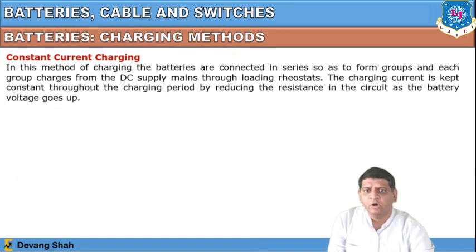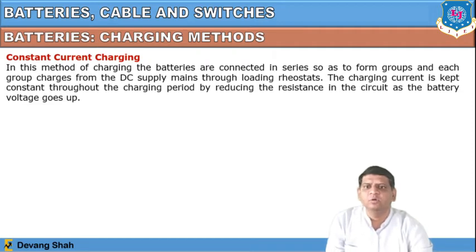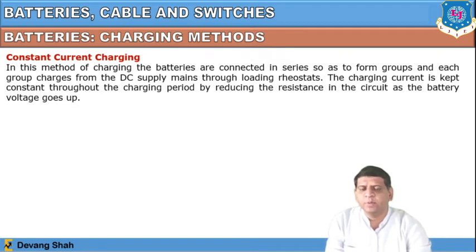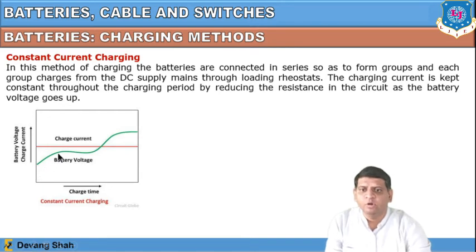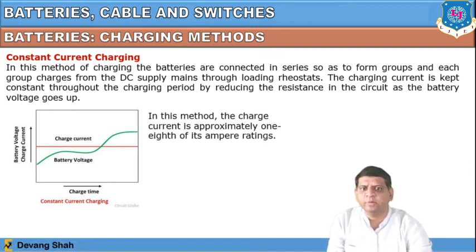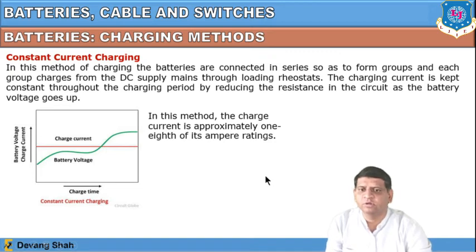The second method is constant current charging, in which the batteries are connected in series to form groups, each group charged from the DC supply mains through a load resistance. Extra resistance is connected when all cells or batteries are in series. The charging current is kept constant throughout the charging period by reducing the resistance in the circuit as the battery voltage goes up — as seen in the graph where charge current remains constant while battery voltage rises from lower to higher value. In this method the charge current is approximately one-eighth of the ampere rating.